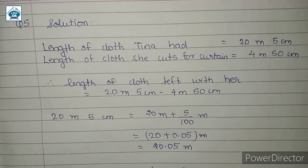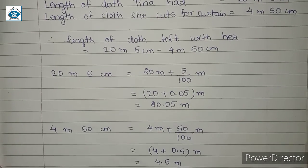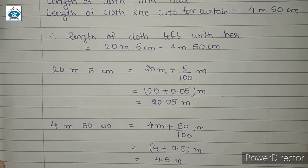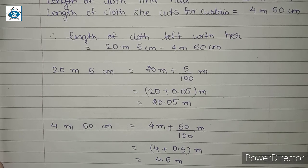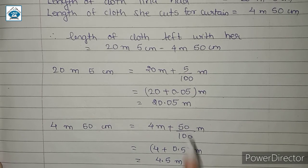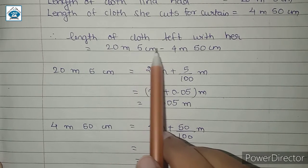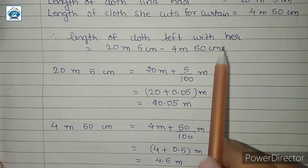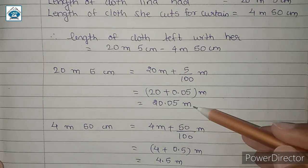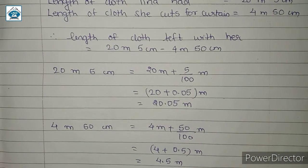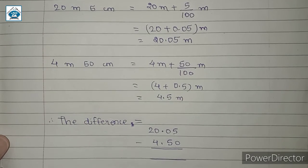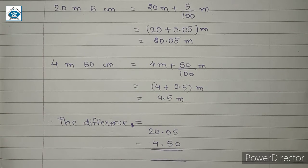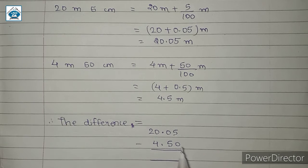In the same way, we convert 4 meter 50 centimeter, which gives us 4.50 meters. Now 20 meter 5 centimeter minus 4 meter 50 centimeter, converting to meters, we will find the difference equal to 20.05 minus 4.50.